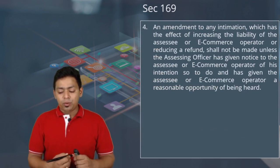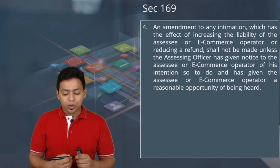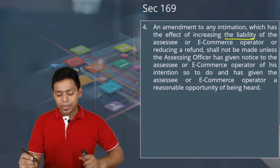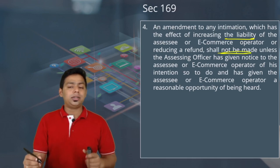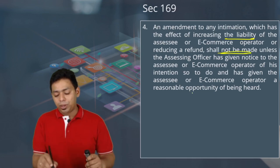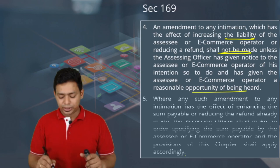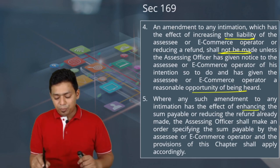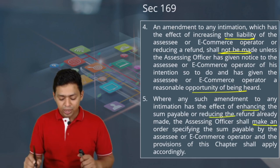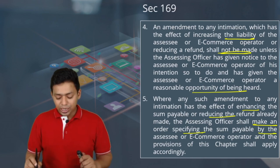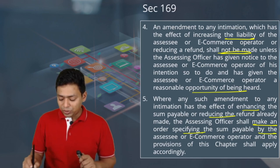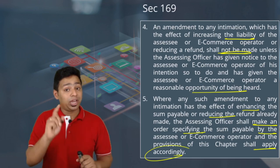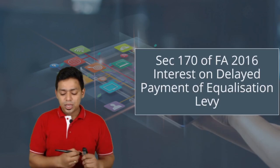If an amendment to any intimation would increase the liability of the assessee, the order cannot be passed without giving an opportunity of being heard. Where any such amendment has the effect of enhancing the sum payable or reducing a refund already made, the AO shall make an order specifying the sum payable, and the due proceedings will be followed whenever the order is against the assessee.